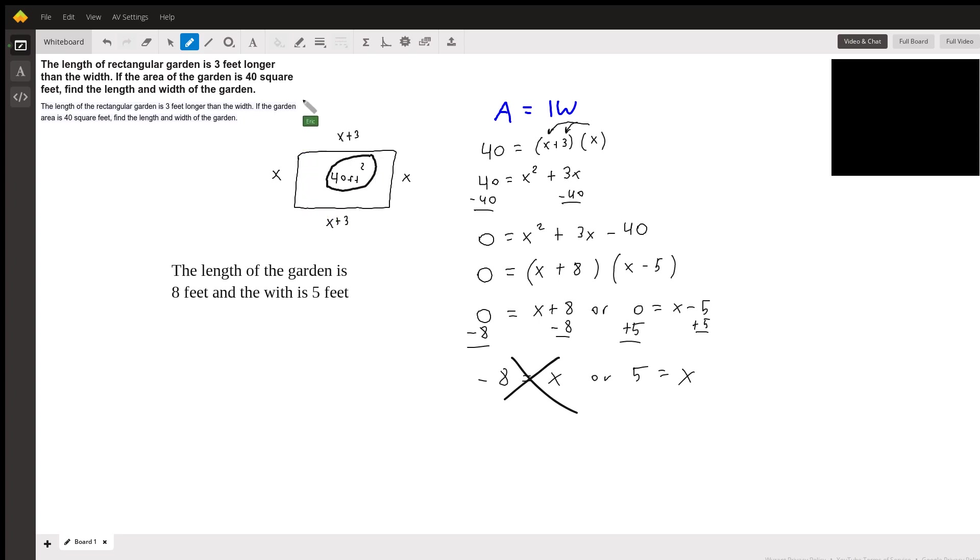Now, you need to understand this is a very important formula to memorize. Area equals length times width. So we know that the area is 40, so we just plug in 40 for A and we know that the length times the width is going to be equal to X plus three times X. Now just distribute the X through both terms and you get X squared plus 3X. So 40 equals X squared plus 3X.